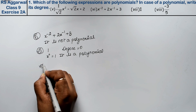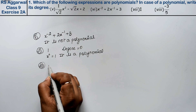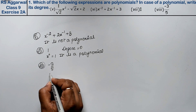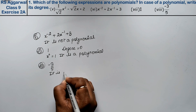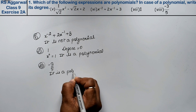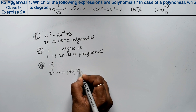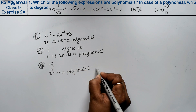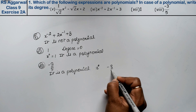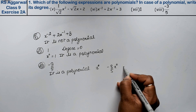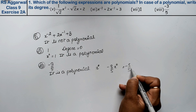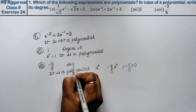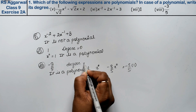Eighth part is minus 3/5. It is also a polynomial. If x has degree 0, then x⁰ = 1, so minus 3/5 times x⁰ gives minus 3/5. That is why it is a polynomial with degree 0.